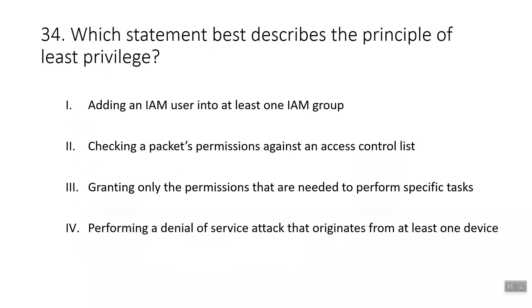Question thirty-four: which statement best describes the principle of least privilege? The correct answer is granting only the permissions needed to perform specific job tasks. We grant least privilege to prevent users from having more permissions than needed. For example, for a cashier in a shop, we grant access only to the cash register system.